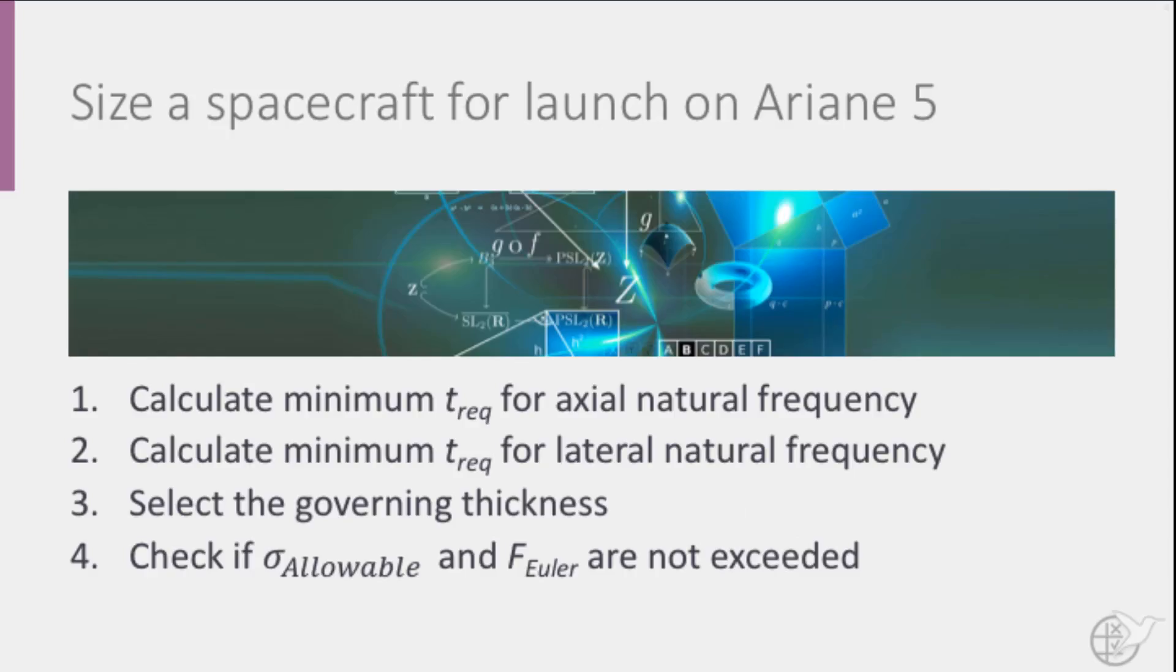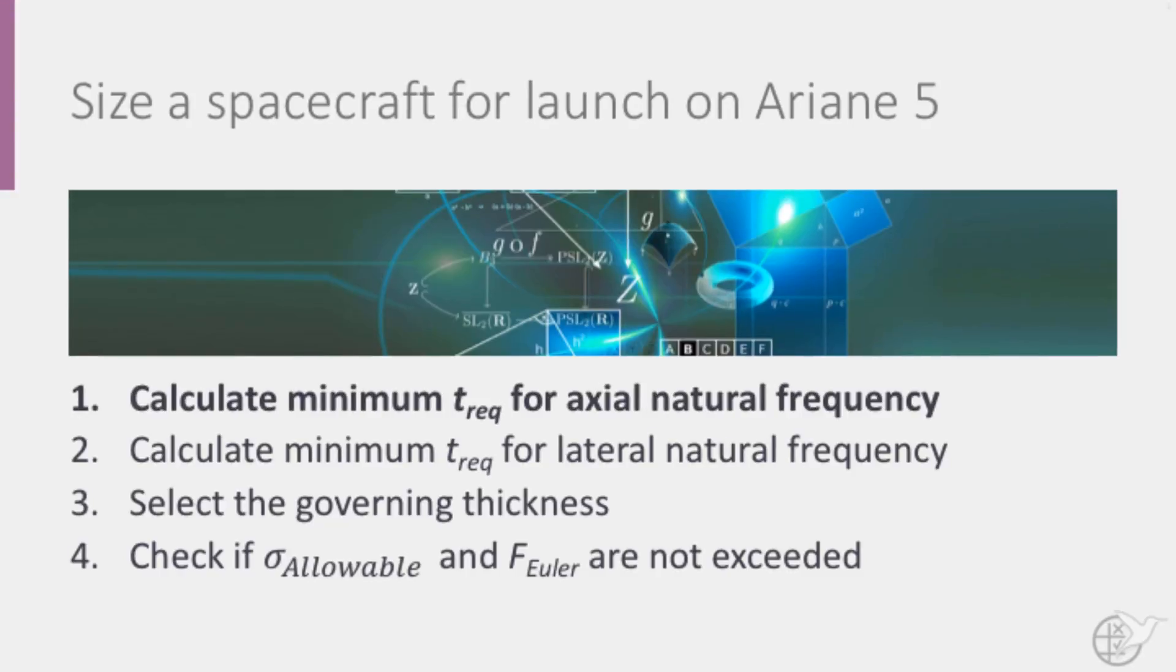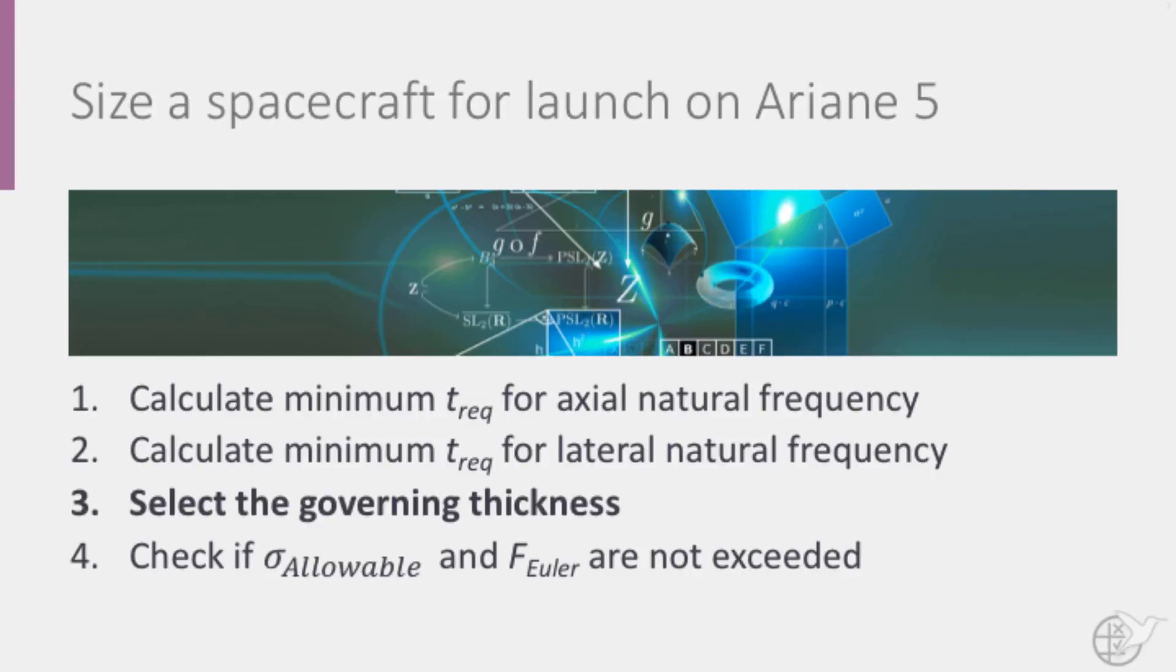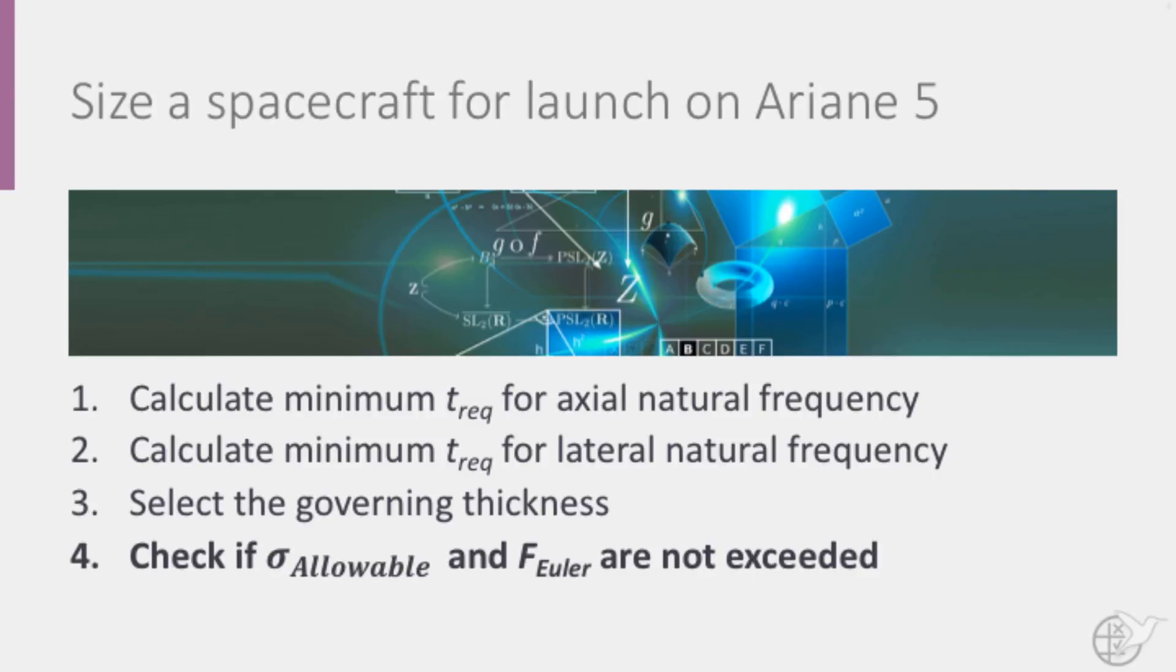Our assignment is to preliminary size the spacecraft for launch on Ariane 5. To do so we must take the following steps. First, we must calculate the minimum required wall thickness based on the minimum required axial natural frequency. We then repeat this step based on the minimum required lateral frequency. In the third step we select the governing thickness. And finally, we check that the maximum allowable stress and the Euler buckling load for axial loading are not exceeded.